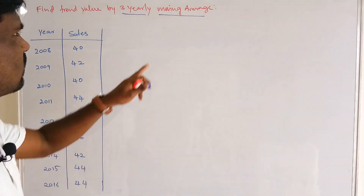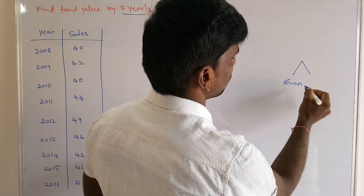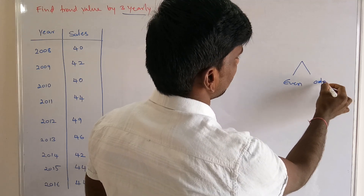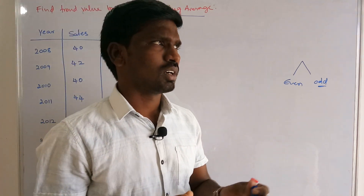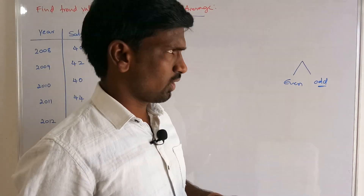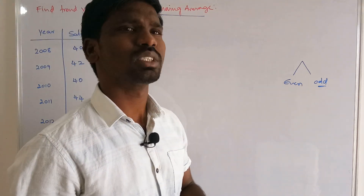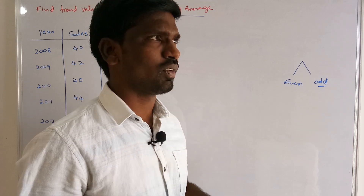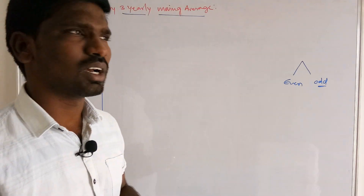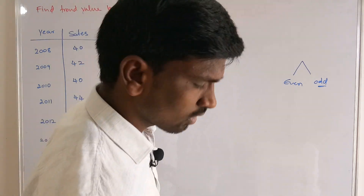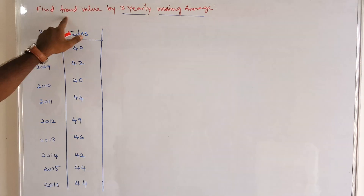There are two types of moving averages: one is an even number of years and the other is an odd number of years. For odd number of years, it is very simple to identify the averages of that particular years' values. When we come to the even number of years, we have to center the calculated averages. If we go through the problems then we can understand easily.